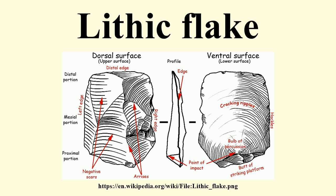The surface area of the core which received the blows necessary for detaching the flakes is referred to as the striking platform. Flakes may be produced by a variety of means.